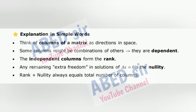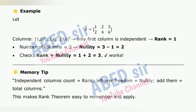Explanation in simple words: Think of columns of a matrix as directions in space. Some columns might be combinations of others — they are dependent. The independent columns form the rank. Any remaining extra freedom in solutions of AX = 0 is the nullity. Rank plus nullity always equals the total number of columns. Example: Let A be a matrix where only the first column is independent. Rank = 1, number of columns = 3, nullity = 3 - 1 = 2.